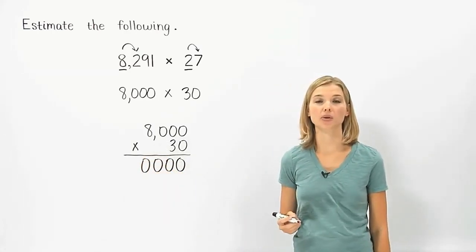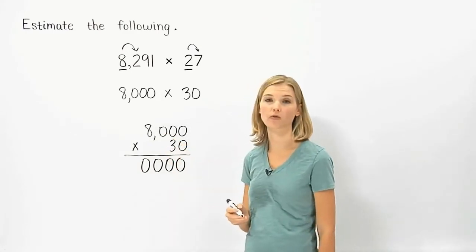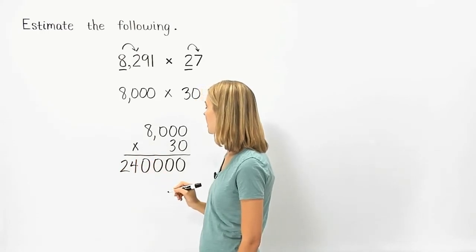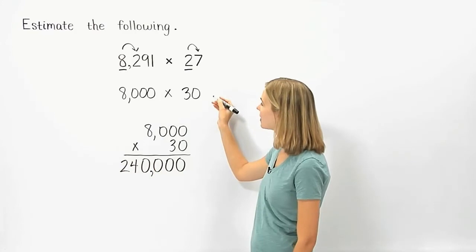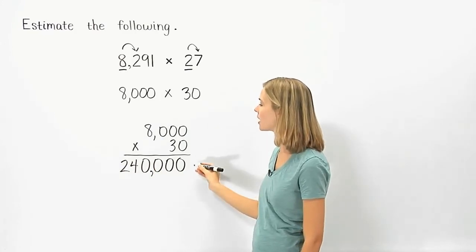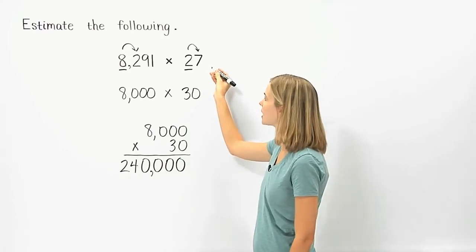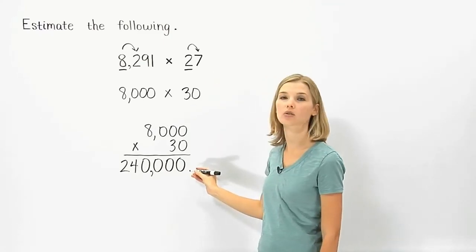Next, we multiply the non-zero digits. In this case, that's 8 times 3, which is 24. So we put 24 in front of the four zeros in our answer and we have 240,000. So 8,000 times 30 is 240,000, which means that 8,291 times 27 is approximately 240,000.